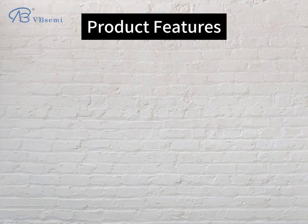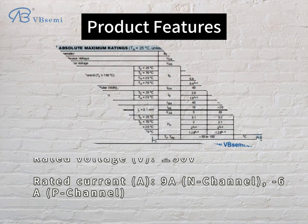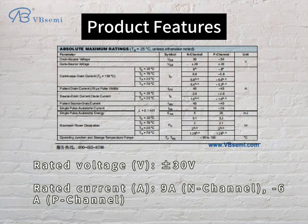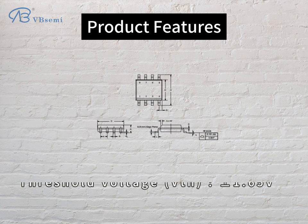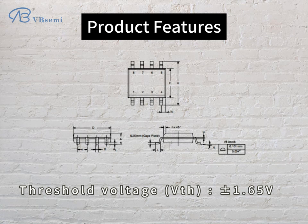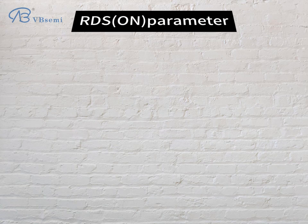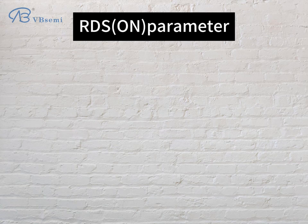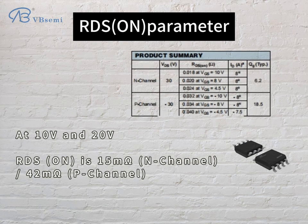Product features: rated voltage 30V, rated current 9A N-channel, 6A P-channel. Threshold voltage VTH is 1.65V. RDS(on) parameter: at 10V and 20V, RDS(on) is 15mΩ for the N-channel and 42mΩ for the P-channel.